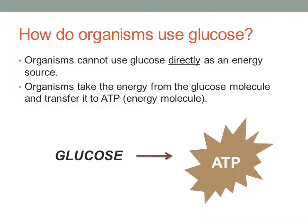Now our last question: how do organisms use this glucose? Organisms cannot use glucose directly as an energy source. When glucose enters our body, we can't just use it immediately. We actually have to take that glucose and transfer that energy to ATP. We cannot use glucose directly, but we can take the energy from glucose and transfer it to ATP.